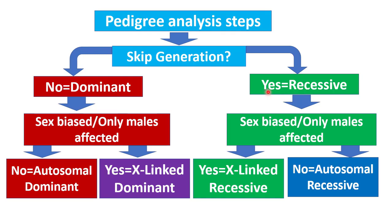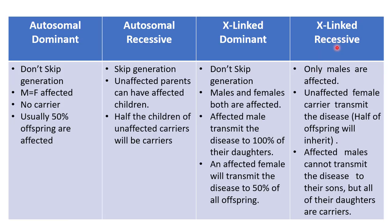If there is a generation skip and sex biasness where only males are affected, it will be X-linked recessive. If males and females are equally affected, it will be autosomal recessive.